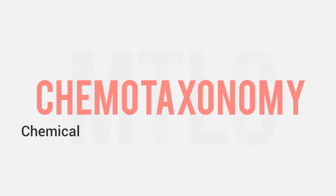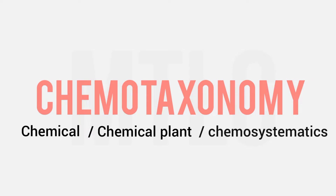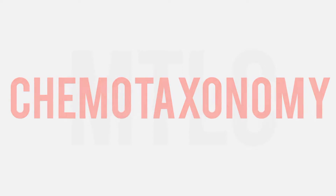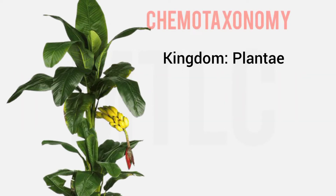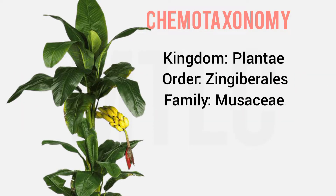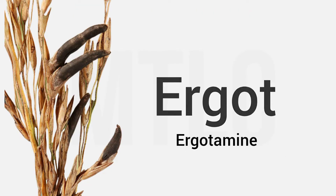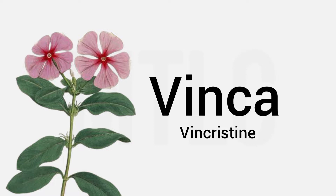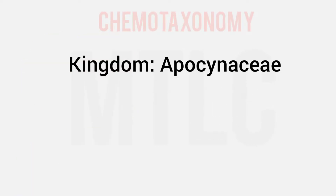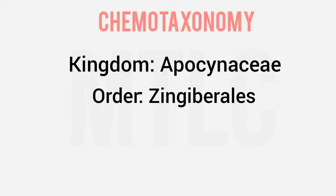Chemical plant taxonomy, chemosystematics — and then we talk about chemotaxonomy. Chemotaxonomy is establishing a relationship between a plant's taxonomic position, making attempts to utilize chemical facts. A chemical fact is used to relate to the taxonomical position.